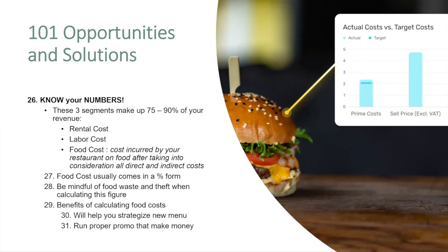Food cost specifically — I want to get into that because it's really a big segment. It's the cost incurred by a restaurant on food after taking into consideration all your direct and indirect costs, right — all the stuff that goes into making a burger. There's a food cost for that. You want to make sure you understand that to make sure you're not losing money.